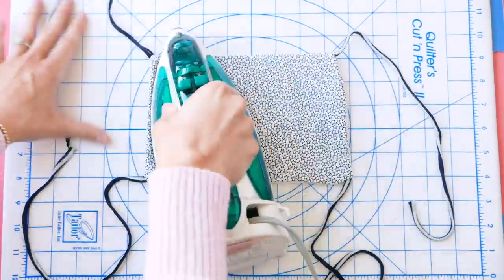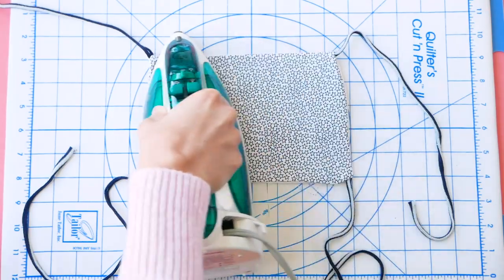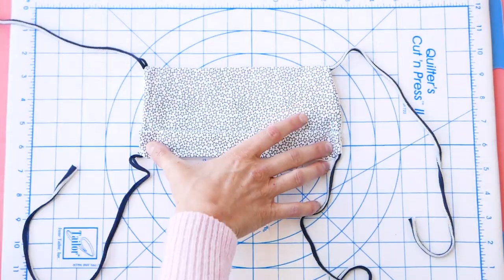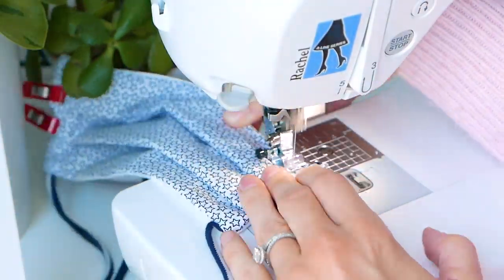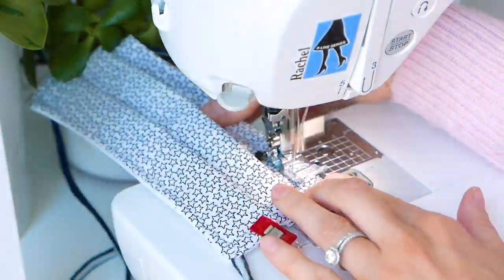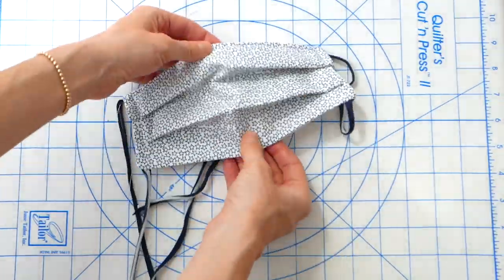Sewing the pleats on this is a little bit trickier just because it's so thick, but your regular machine should be able to handle it. So fold up your two pleats, overlapping about a quarter of an inch. Like I said, you might just want to go slow on the pleats because it's really thick and you might want to use your hands to help it through the machine. And that's it. That's your double thickness face mask.